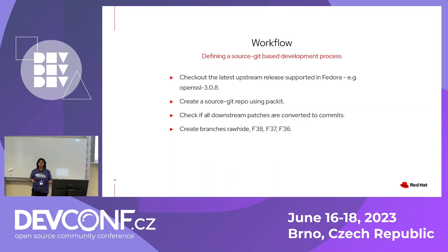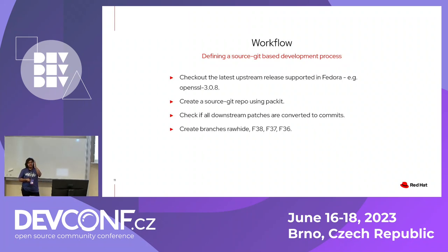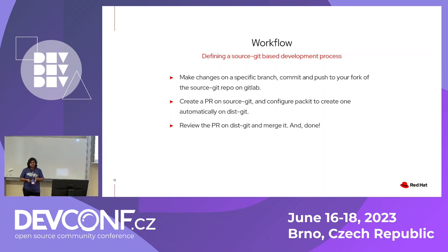To define a workflow for how we could use this in downstream maintenance: first, find out what is the latest release of the software you want in your sourcegit repository, then create a sourcegit repo using Packit. Check that all the downstream patches were correctly applied as commits with no merge conflicts. Since in Fedora we work with many releases like Rawhide, F38, F37, and so on, you need similar branches in your sourcegit repository to track them. Check out a branch in sourcegit, make your changes, commit, push, and create a pull request. Once you review a pull request in distgit, you can merge it and you're done.